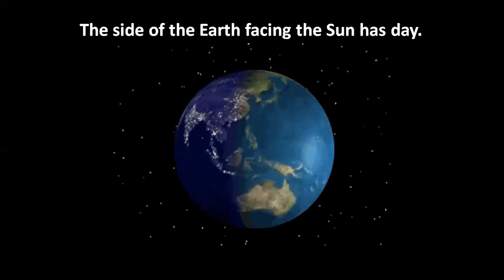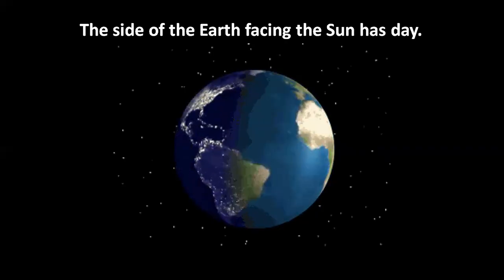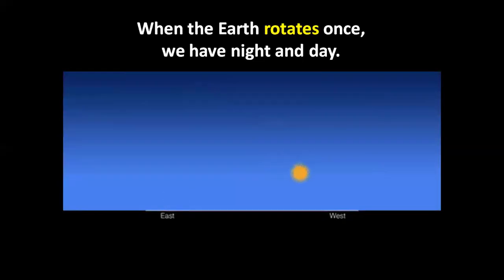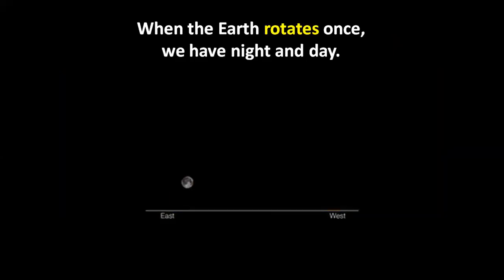The side of the Earth facing the Sun has day. This is the view from space. When the Earth rotates once, we have night and day. This is the view from Earth.